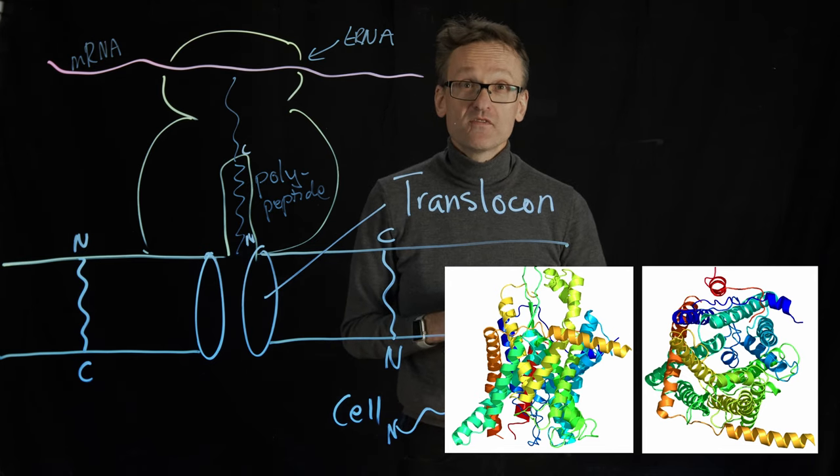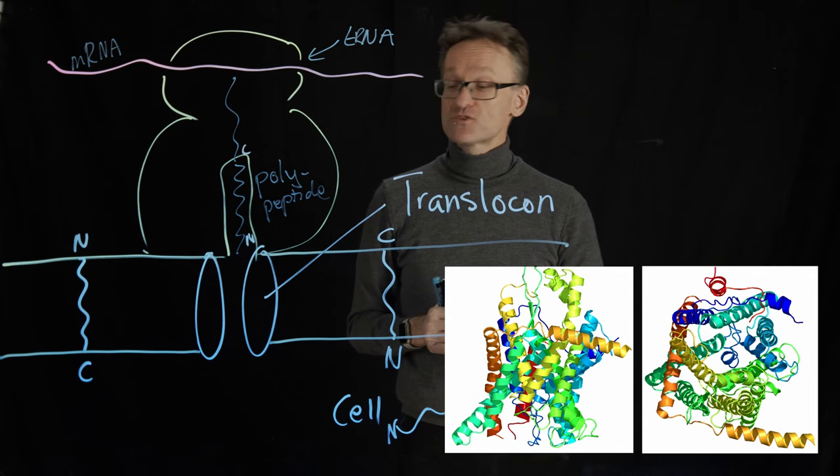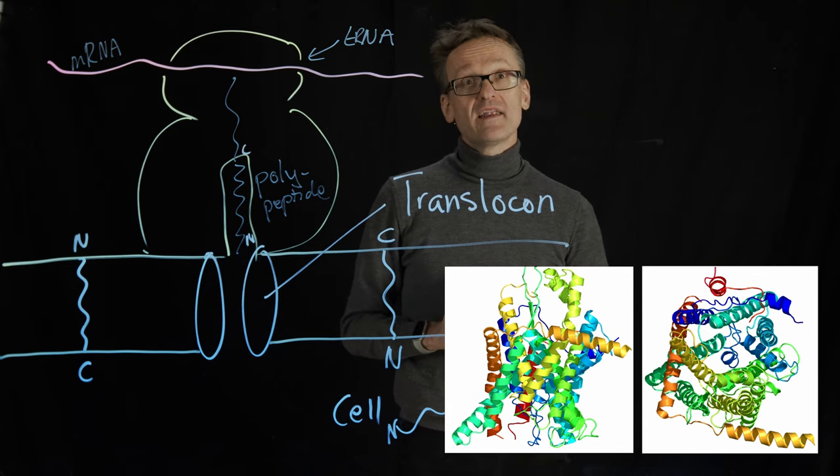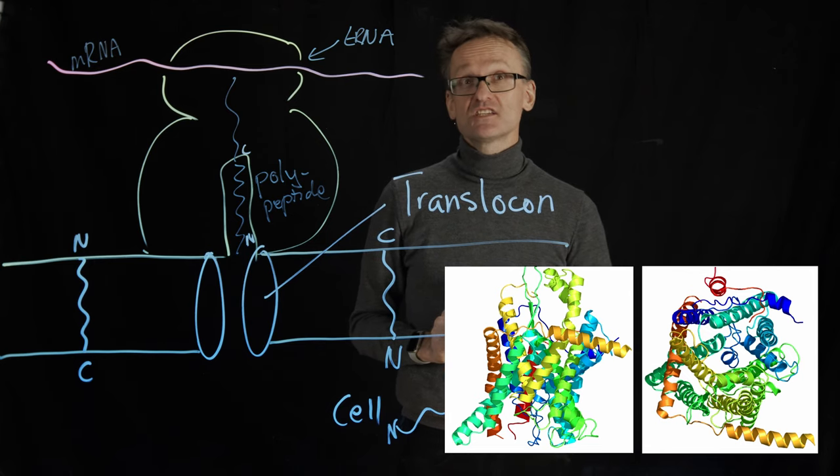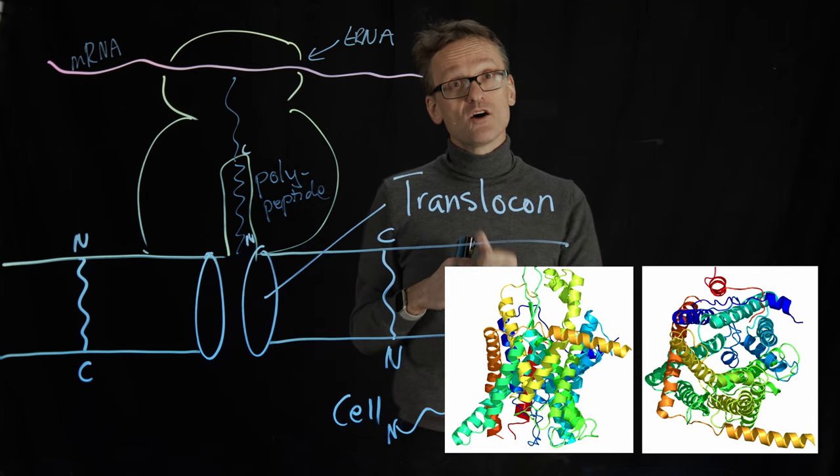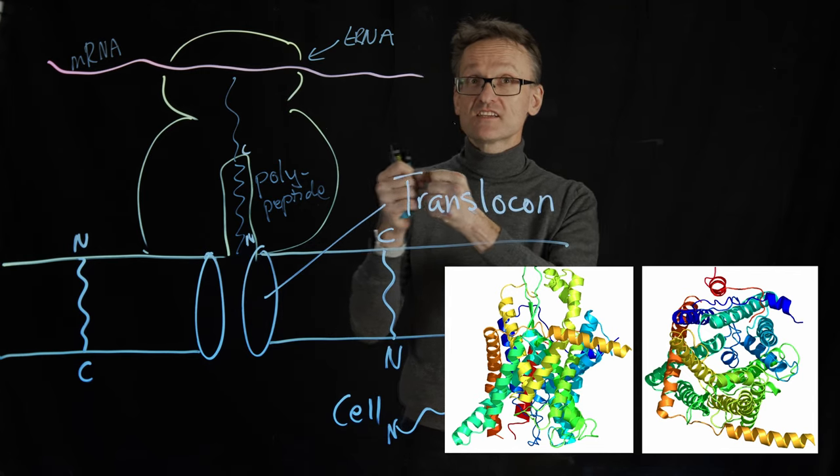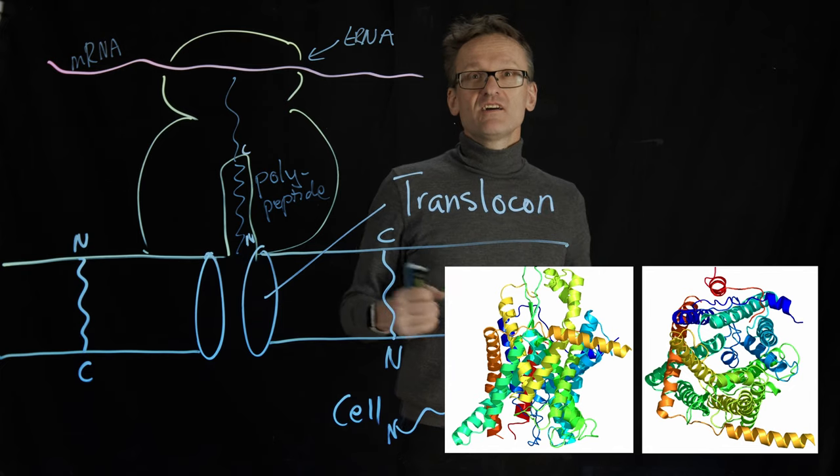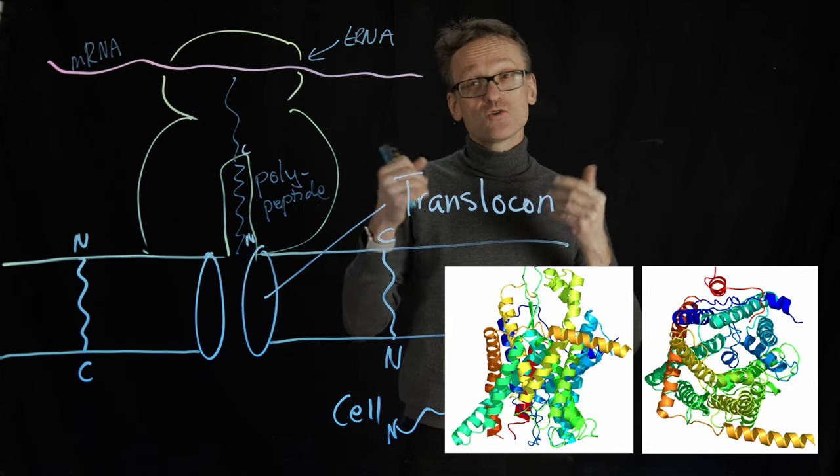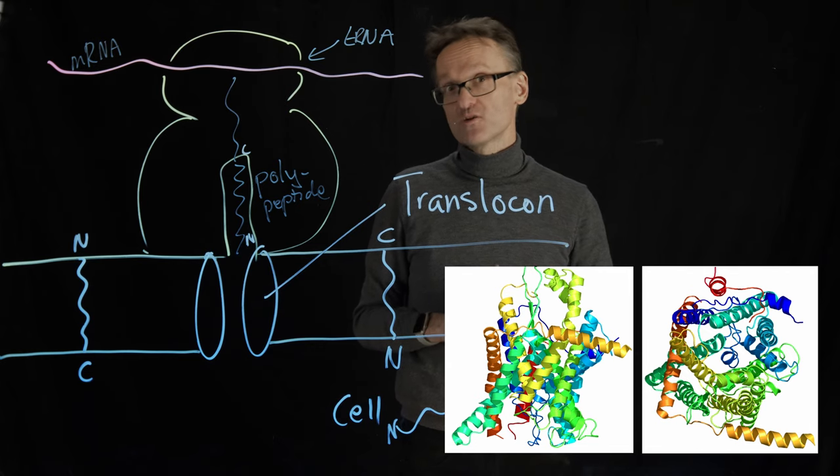This is a bit beyond the scope of this particular class, but there was a famous result. The reason why we know this is true is Popot and Engelman showed that they took a gene of rhodopsin, in fact, that has seven helices, and then they cut this gene in two halves. So one expressing three helices and the other one four. Now these things are going to be inserted at different places, but what they showed is that they still got some functioning from this protein.